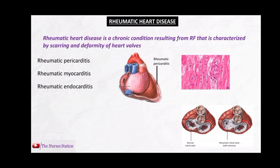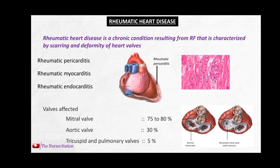When rheumatic endocarditis occurs, any valve may be involved — mitral, aortic, tricuspid, or pulmonary. The mitral valve is involved in most cases, with an incidence of 75 to 80 percent. Aortic valve involvement is 30 percent, and tricuspid and pulmonary valves are involved in about 5 percent of cases.